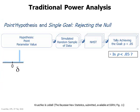Traditional power analysis involves a point hypothesis and a single goal: rejecting the null. The spike distribution illustrates a specific hypothetical value for effect size. The flow chart shows repeated random samples of data of a particular sample size, and for each set of data, null hypothesis significance testing checks whether p is less than 0.05. The long-run probability of achieving this goal is called the power. In real research, however, we do not know a specific value for the hypothetical effect size — we are uncertain about it — and power varies dramatically with the hypothesized value.